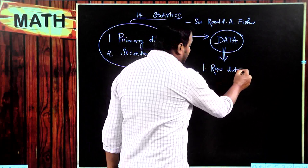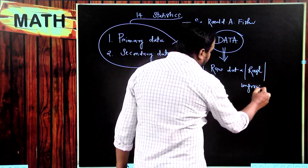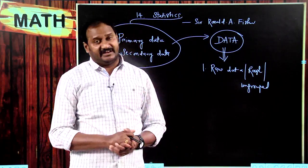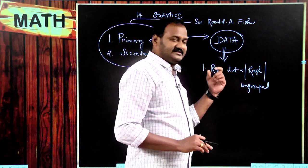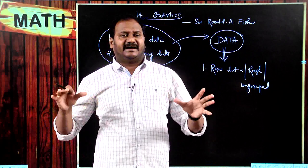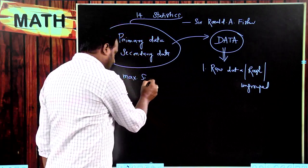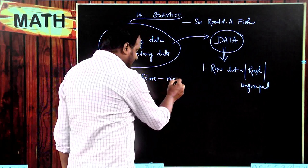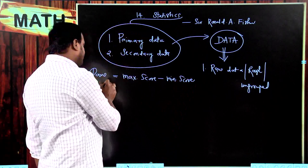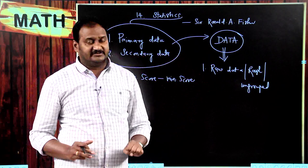This data is called ungrouped data or raw data or rough data. After collecting raw data, by observing all the scores I can find what is the maximum score and what is the minimum score. Maximum score minus minimum score gives us the range of the data. Range is nothing but the highest value minus the lowest value.